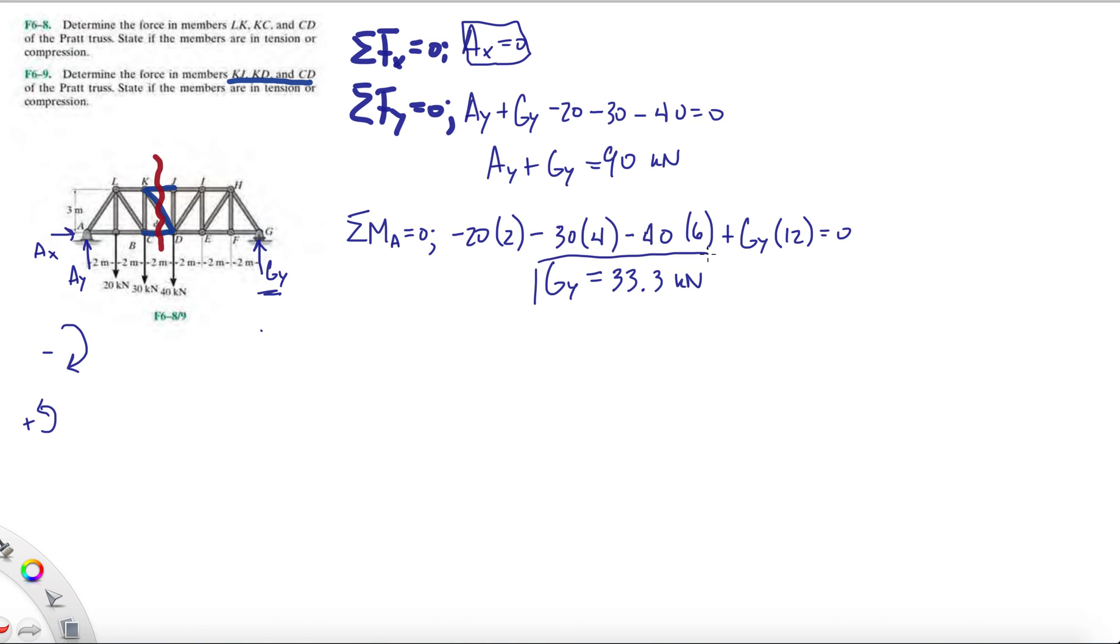And then just plug it back into Gy, and then we can find out what Ay is, which will be 56.7 kilonewtons. Remember, this is the first thing you want to do when you have one of these trusses - find the reactions first, so find the external forces acting on the whole structure, and then begin to find the internal forces, which is what we'll be doing next.